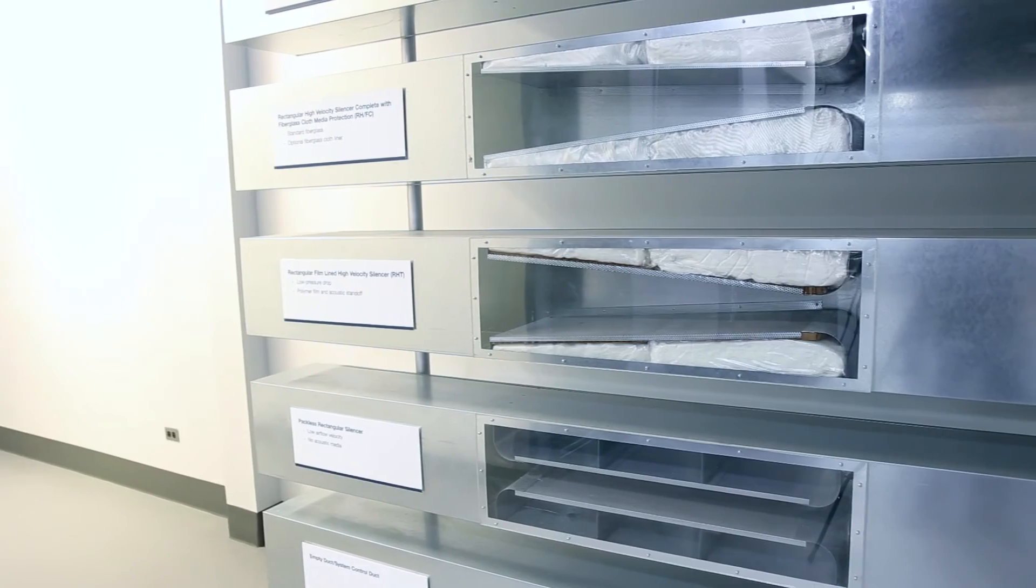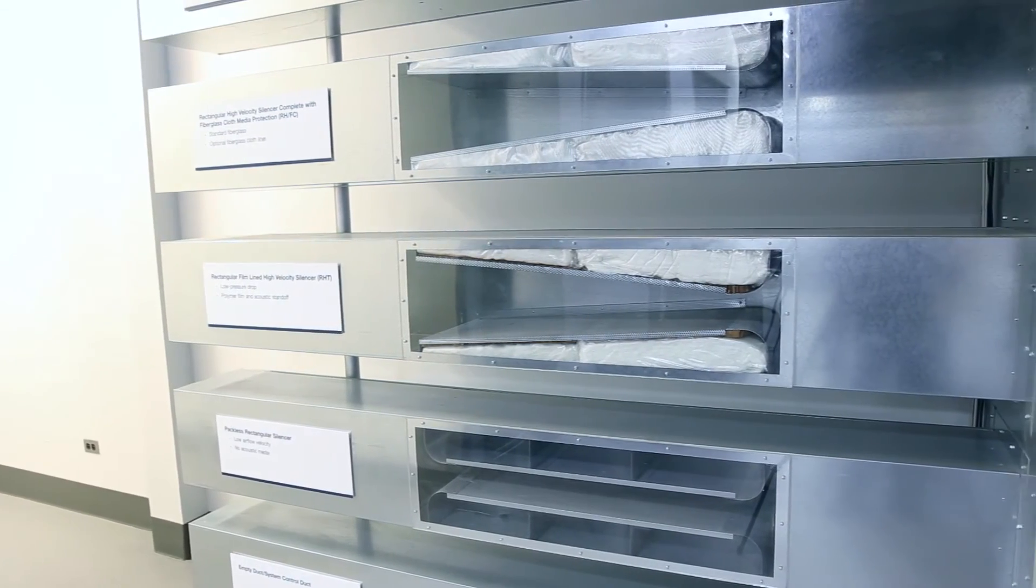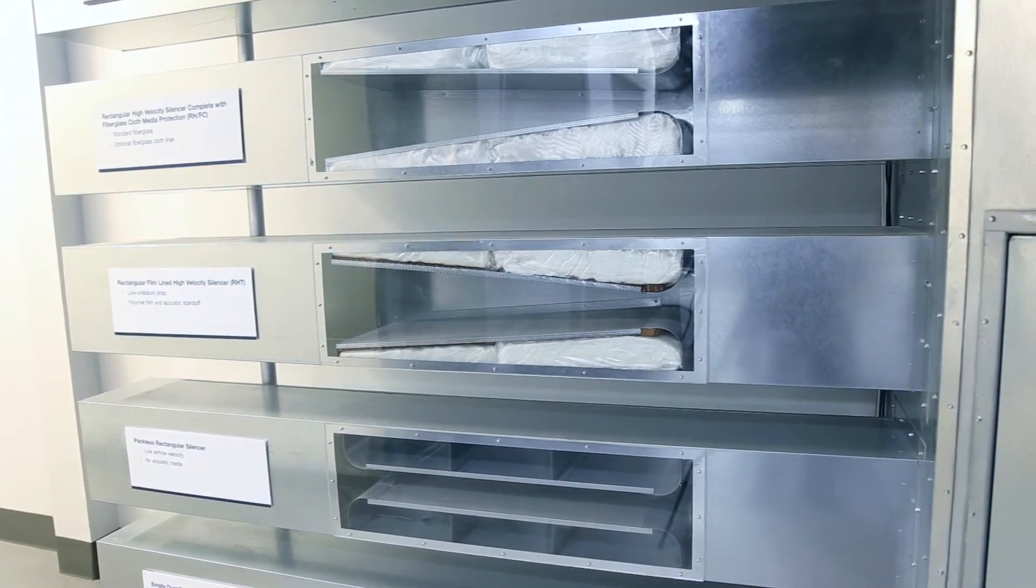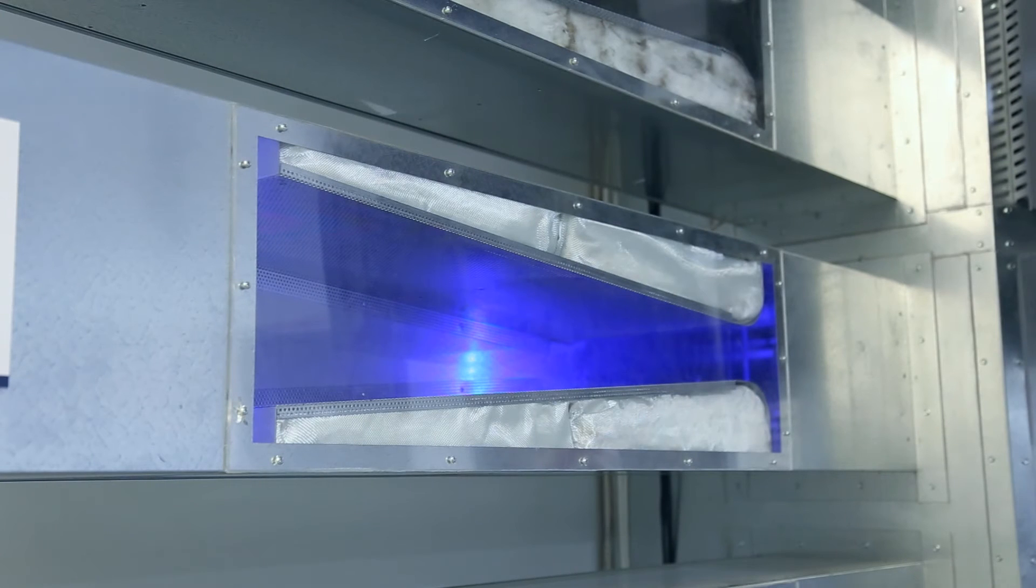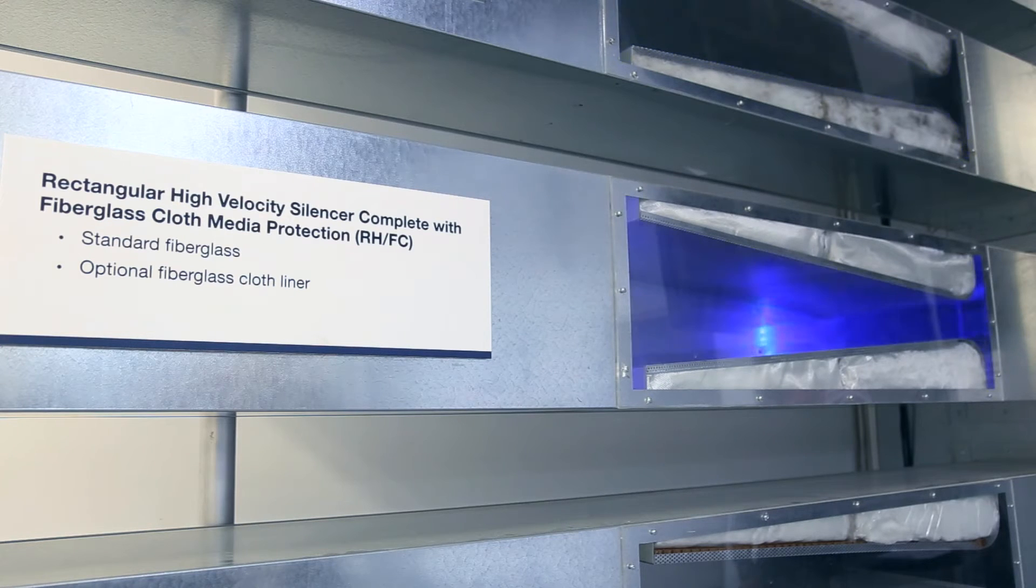The next three silencer examples are for different media options and liner types. The first silencer is a rectangular high velocity silencer with a fiberglass cloth liner. This fiberglass cloth liner protects the acoustic media from erosion and has very little effect on the acoustical performance.